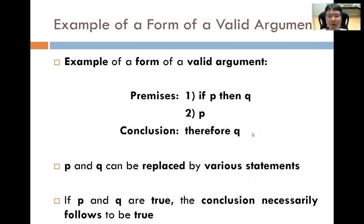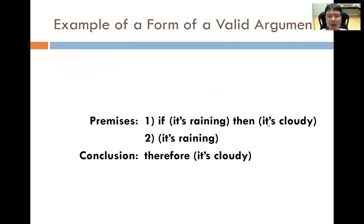What is an example of this valid argument form? Premise 1: if it is raining, then it is cloudy. Premise 2: it is raining. Conclusion: therefore, it is cloudy. You can see that 'it is raining' is statement P, 'it is cloudy' is statement Q — it is indeed in the form of a valid argument. We do not have to argue whether the conclusion is true. What we have to discuss is whether Premise 1 and Premise 2 are true.